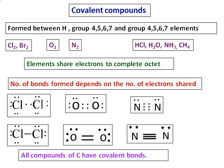A triple bond is formed. The key point to note is that each bond contains two electrons. All compounds of carbon form covalent bonds, and compounds of carbon have a special chemistry called organic chemistry.